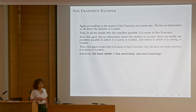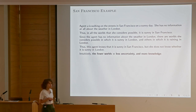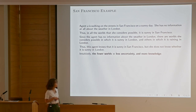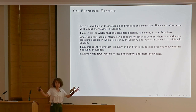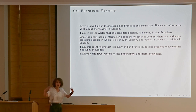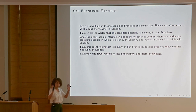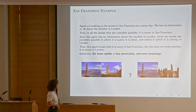Intuitively, the fewer the possible worlds you have, the less uncertainty and more knowledge. So if you don't know, it should blow up your space — which is a little bit weird because if you think in a normal sense, knowledge should be an accumulation of facts. So it's a different, orthogonal way of thinking about it.